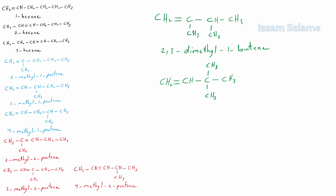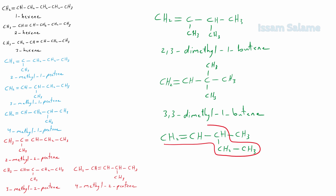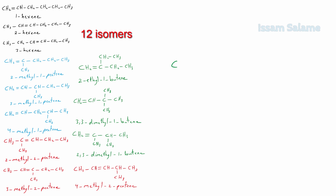That structure is called 3,3-dimethyl-1-butene. Adding two methyls to the second carbon is not possible since carbon cannot make more than four bonds. What about an ethyl substituent at the third carbon? In that case the longest chain becomes pentene and the name would be 3-methyl-1-pentene — not a new isomer. But adding an ethyl substituent to the second carbon gives us 2-ethyl-1-butene.